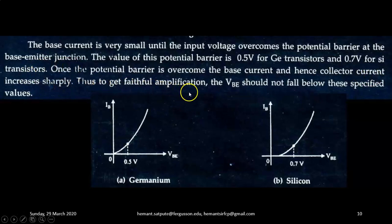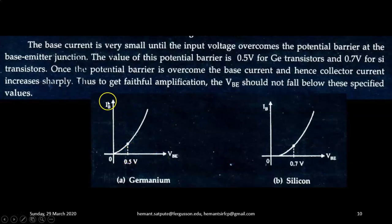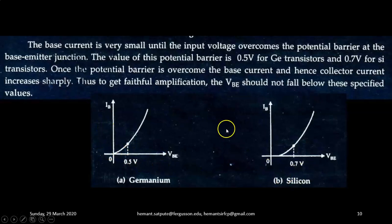Thus, to get faithful amplification, VBE should not fall below these specified values. The forward characteristic graph of the base-emitter diode has been shown here — a graph of IB against VBE for germanium and for silicon diodes.